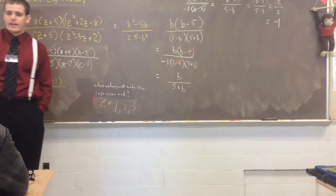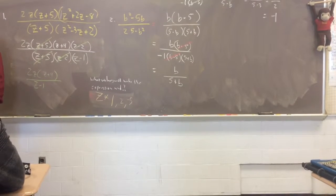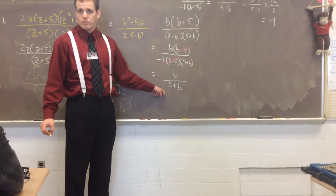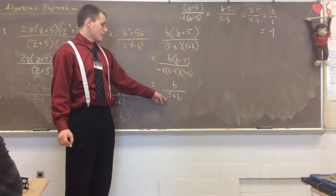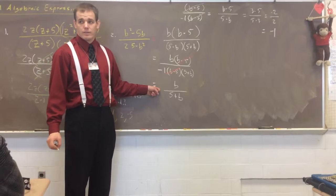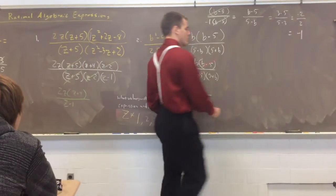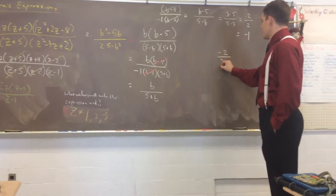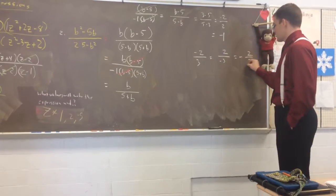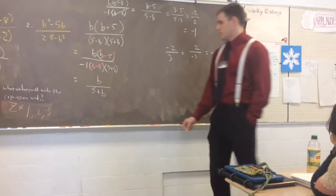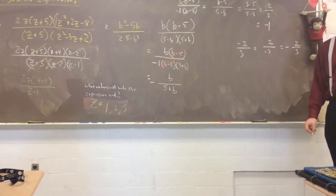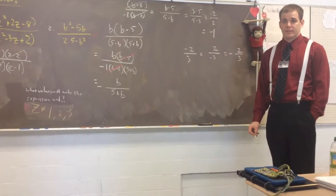Does it matter where I put the negative 1? Can it go in the numerator? Can I make it negative B over 5 plus B? Actually, I can. Can I put it in the denominator? Make it negative 1 times 5 plus B? Yeah. Can I stick it out in front? Yeah. You remember doing this with slope. Is negative 2 over 3 the same as 2 over negative 3? Is that the same as negative 2 thirds? Yeah, it's all the same, right? So, I'll just throw it out front. Is this super tough? No.